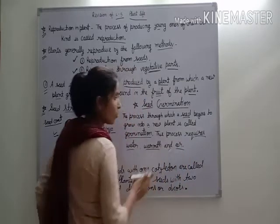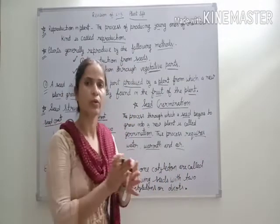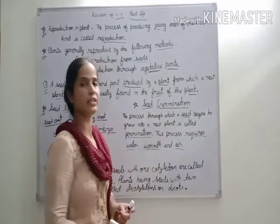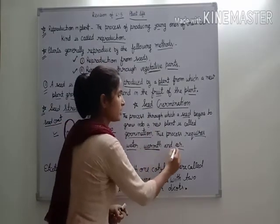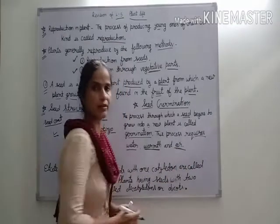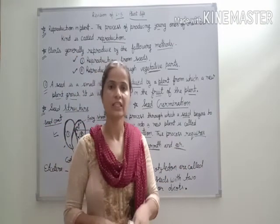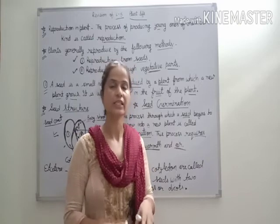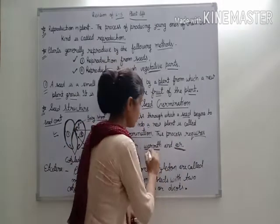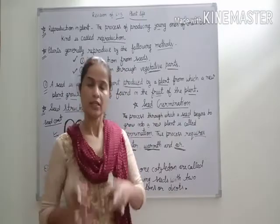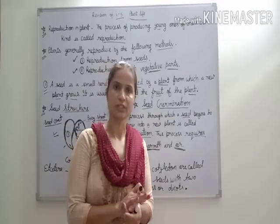This process requires water and air. Yani seed germination ke liye water, air, and soil — sab ki zaroorat hoti hai. Jab ek seed zameen ke andar place kiya jata hai and these three things are proper, then seed germination starts.